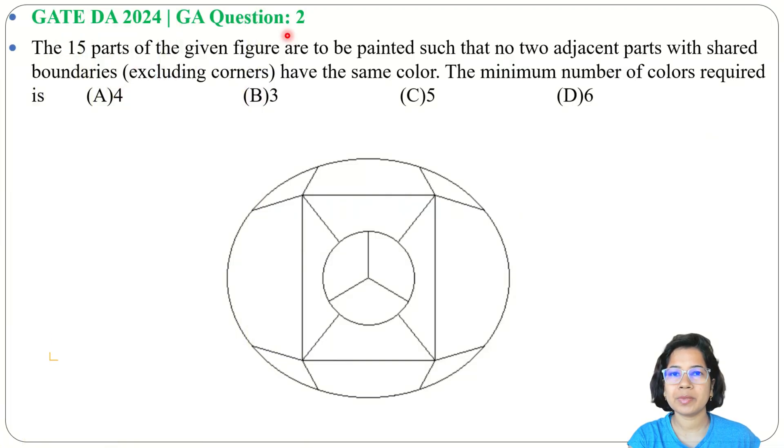Let's solve one previous question of general aptitude. This question was asked in GATE DA 2024 GA question number 2. The 15 parts of the given figure are to be painted such that no two adjacent parts with a shared boundary, excluding corners, have the same color.